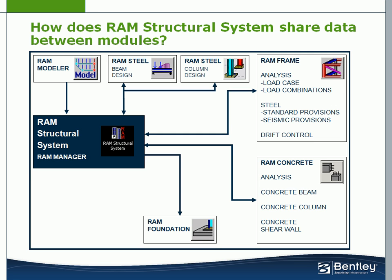Next we look at RAM Modeler. In RAM Modeler, all of the steel, concrete, and other material beams, columns, braces, and wall members of the model are defined. Members are able to be defined as gravity only or lateral frame members. Deck type, one-way versus two-way, and deck orientation will be defined. Also, gravity dead, live, storage, roof, and snow loads can also be defined. Loads are able to be placed as area, line, and point loads in the model.